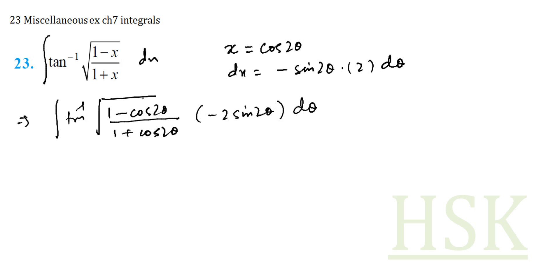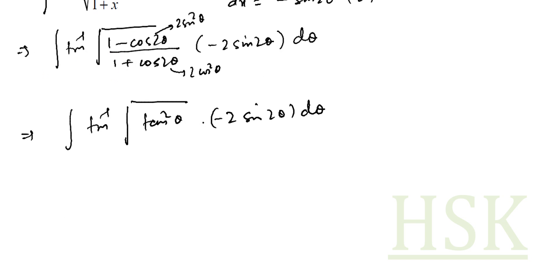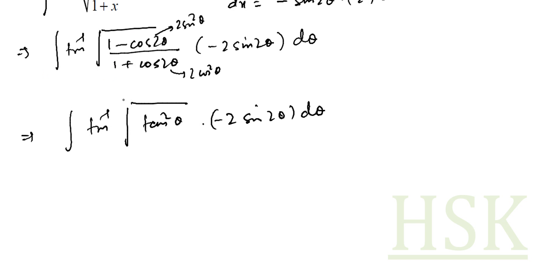As done earlier, 1 minus cos 2θ becomes 2 sin² θ and 1 plus cos 2θ becomes 2 cos² θ. The 2s cancel out, so this becomes tan θ. Therefore the expression becomes tan inverse of under root of tan² θ into minus 2 sin 2θ dθ, and the square cancels, giving us tan inverse of tan θ.